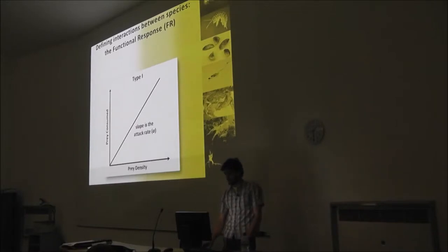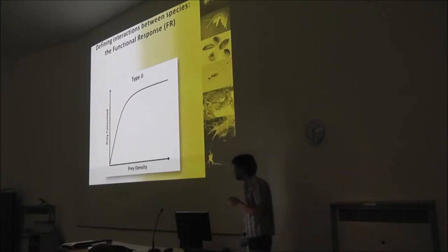Everyone else really needs to handle their prey. We need to hold it, manipulate it, digest, ingest. And that leads to handling limited functional responses that are found more commonly. We see this as a type 2 here. And the handling limitation results in saturation of those feeding rates at high densities. And the attack rates define the bottom part of the curve.